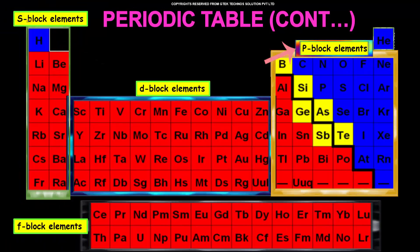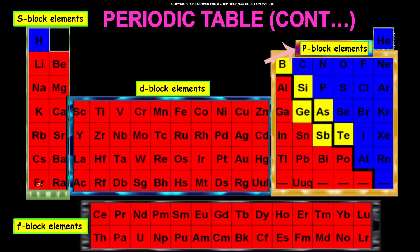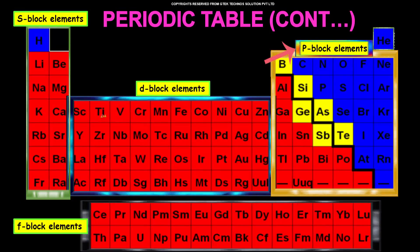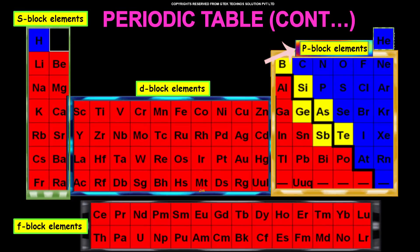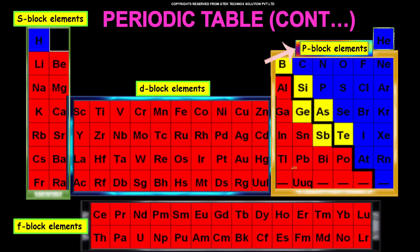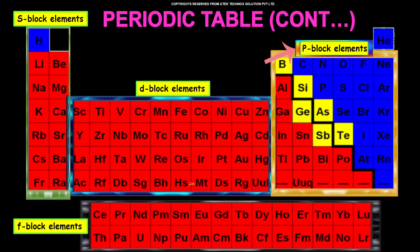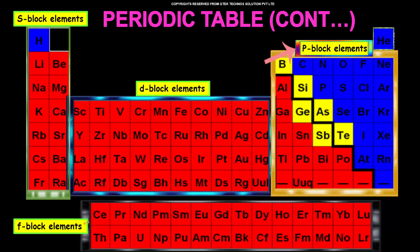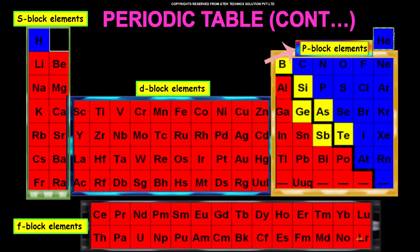In the periodic table, you have your S-block elements here, your D-block elements here, your P-block elements here, and finally your F-block elements here.